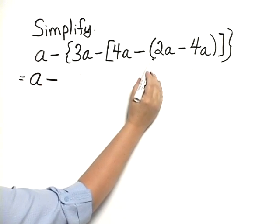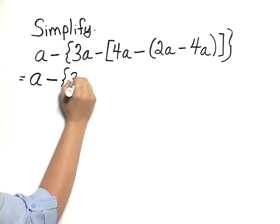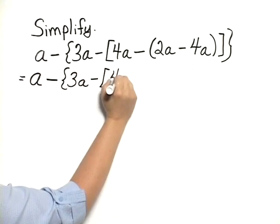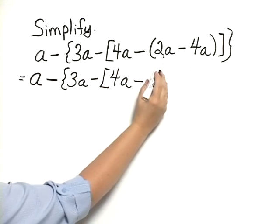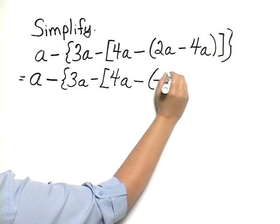So I'm going to be working with the innermost grouping symbol, I'm going to copy the rest of it. A minus 3A minus 4A minus, and now 2A minus 4A is negative 2A.